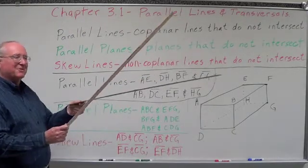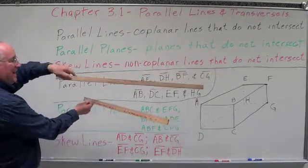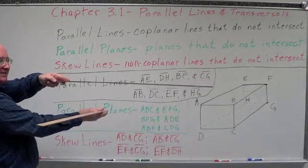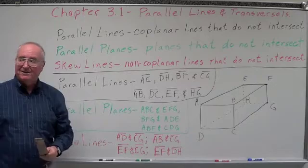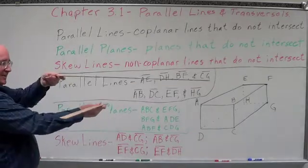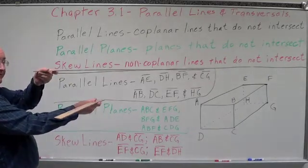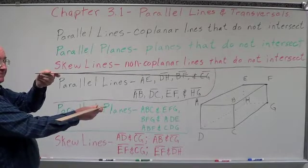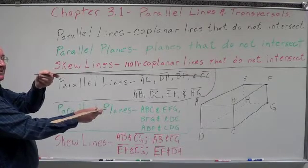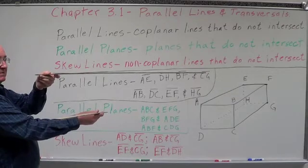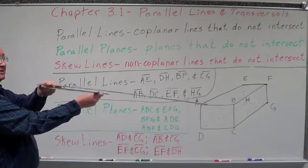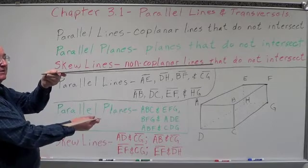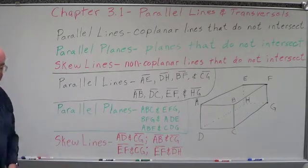The best example of skew lines would be highway overpasses. For instance, right here at College and 287 — 287 goes on top, College goes on bottom. You don't have to stop. They look like they cross from the air, but they don't — those are skew lines.